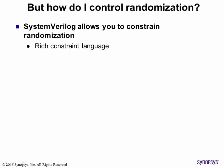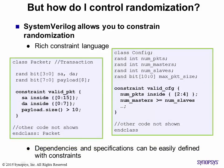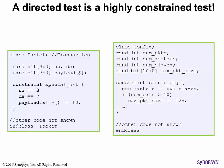SystemVerilog also provides a rich constraint language. You can control the boundaries and limits of randomization using constraint blocks. A constraint is a set of conditions for the random number generator. This is one of the five languages that comprise SystemVerilog. This allows you to harness the full power of randomization. For example, a directed test is nothing but a highly constrained random test. Randomization makes it very easy.